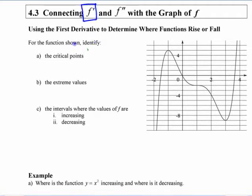The first derivative is the rate of change of the original function. The second derivative is the rate of change of the first derivative, the rate of change of the rate of change.